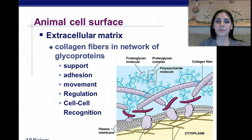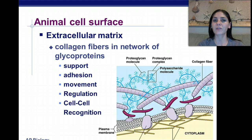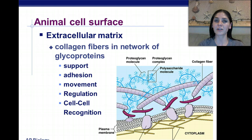The animal cell surface has an extracellular matrix, and it's composed of collagen fibers and a network of glycoproteins. They serve the functions of support, adhesion, movement, regulation, and cell-to-cell recognition.